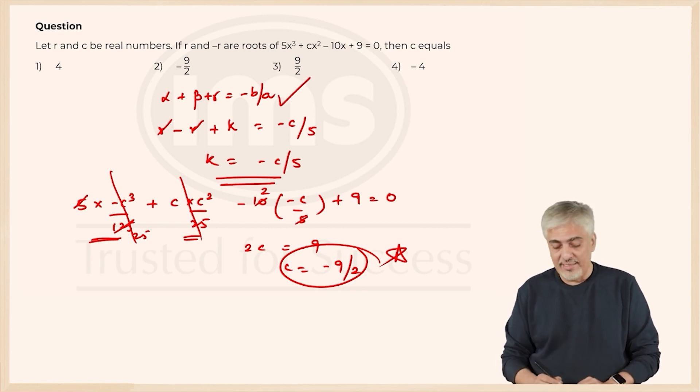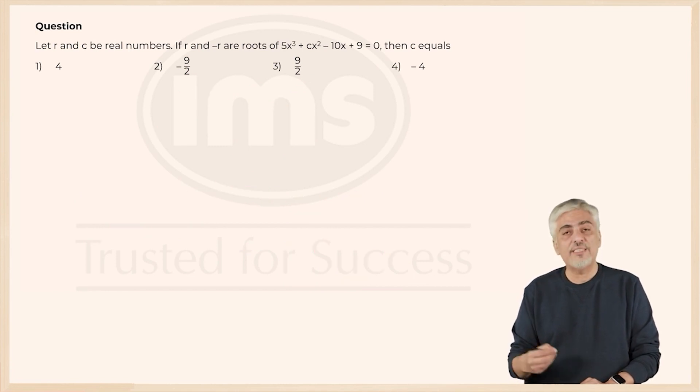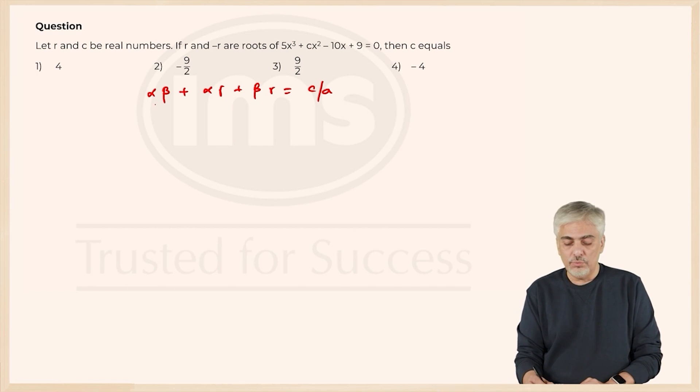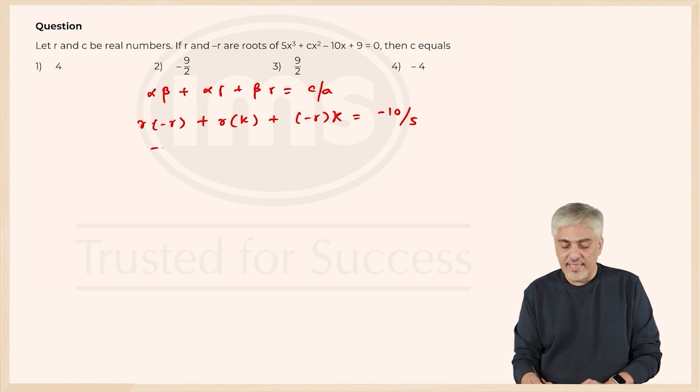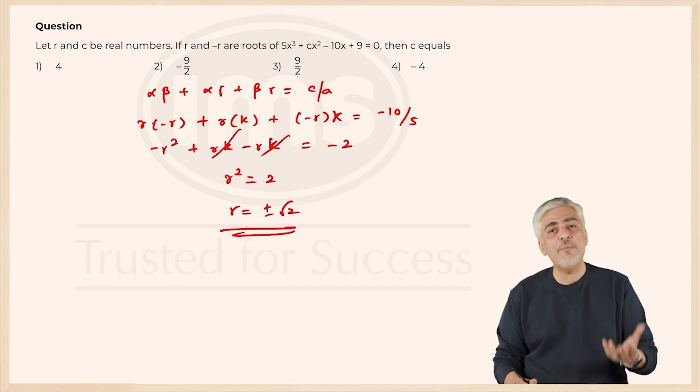We could have used one more way of finding it, using two roots at a time property. What was that property? αβ + αγ + βγ = c/a, right. So, r × (-r) + r × k + (-r) × k = c/a. What is c/a? c in this case is -10 upon a is 5. So, this is -r² + rk - rk = -2. rk, rk cut. So, we have got r² = 2, r is positive or minus √2 and then the third method will follow the same approach which we followed in the second method.